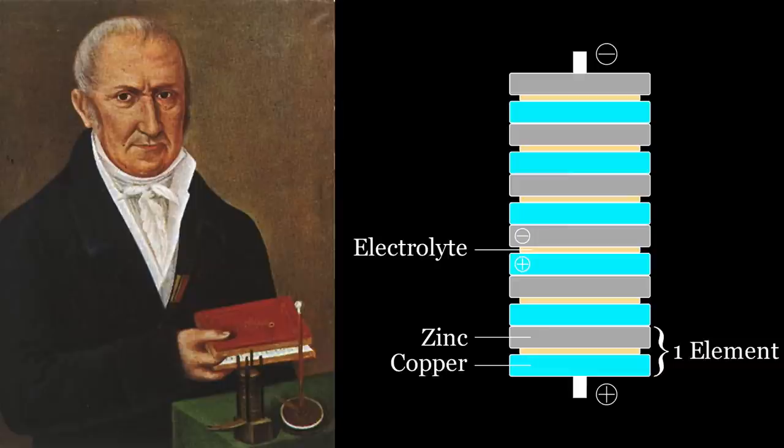Volta thought that the combination of the two metals set up a tension allowing the copper to become negative and the zinc positive. This idea seemed to be a mingling of the two ideas of electric charge and electric potential.